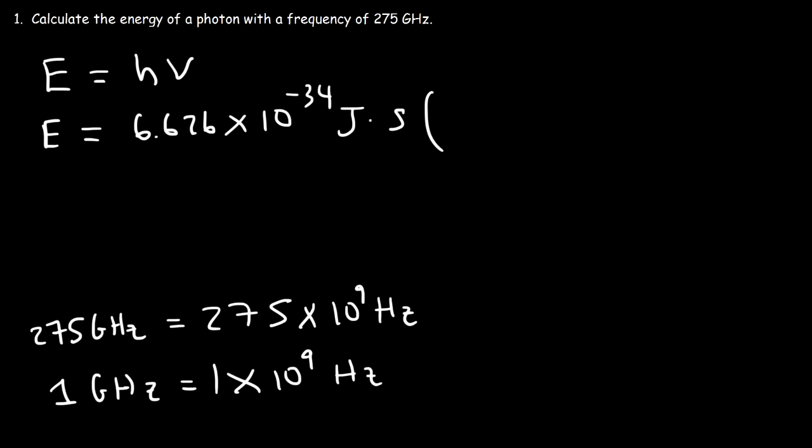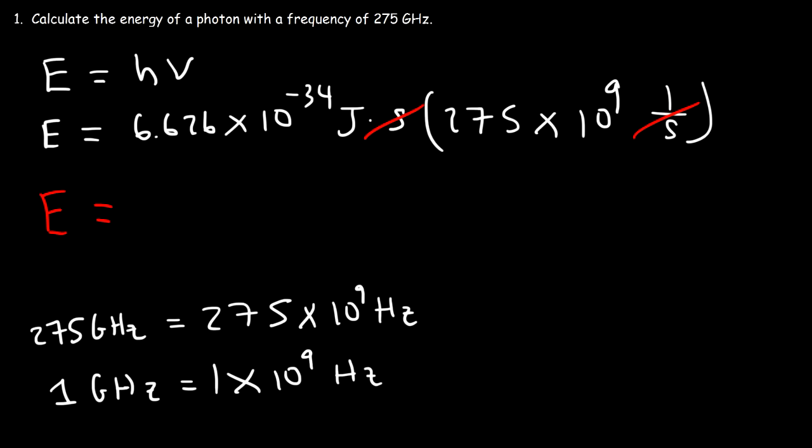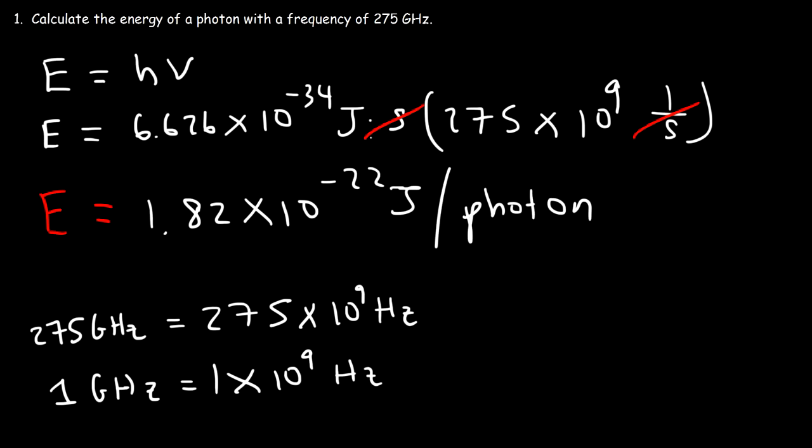So we have 275 times 10 to the 9, and hertz is the same as seconds to the minus 1. The unit seconds will cancel, giving us the unit joules. Multiplying 6.626 times 10 to the negative 34 by 275 times 10 to the 9, the energy per photon is 1.82 times 10 to the minus 22 joules per photon.